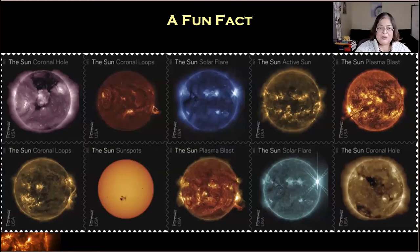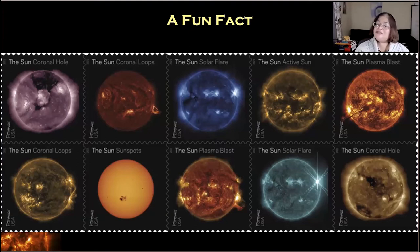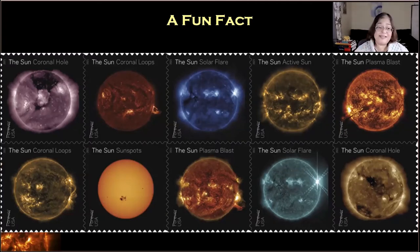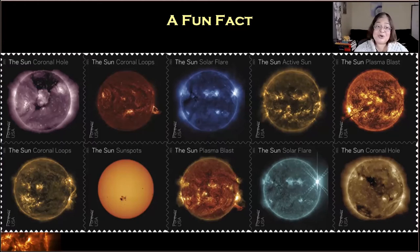Just a fun fact — the U.S. Postal Service is soon going to release a set of stamps about the sun. These are images of the sun in different wavelengths, so it's not what our eye can see, except the one where you see the sunspots. It actually shows how much more interesting the sun is than just a ball of gas.